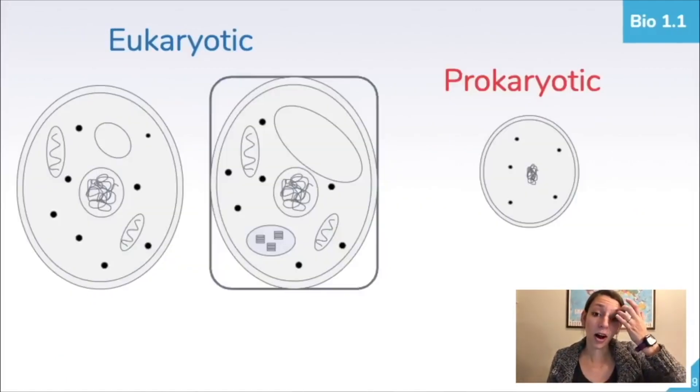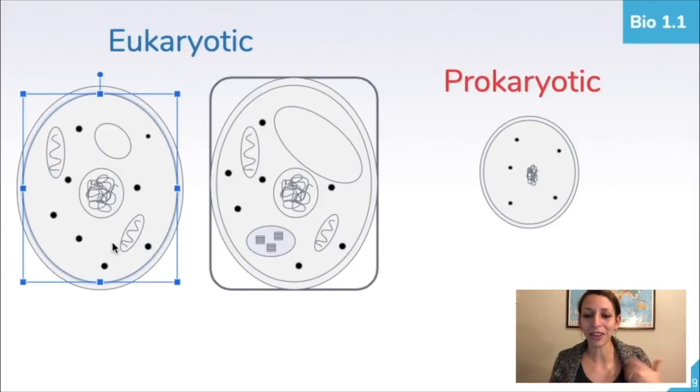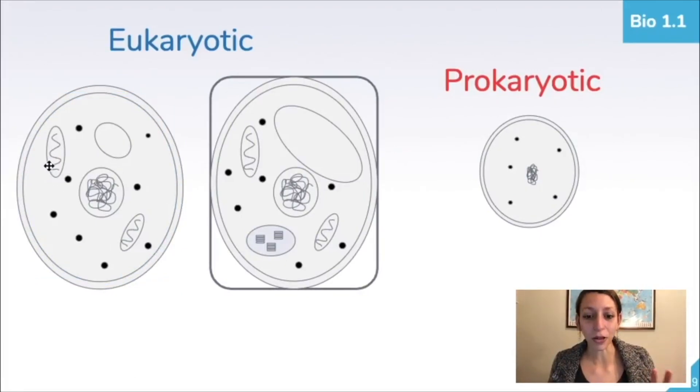Now, if we look back at our plant and animal cells, these are both eukaryotic organisms, meaning they have a true nucleus, or they have a nucleus, and other membrane-bound organelles, so organelles like the mitochondria, organelles like vacuoles, and these are generally larger and more complex.